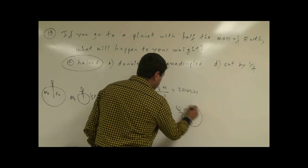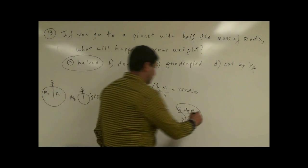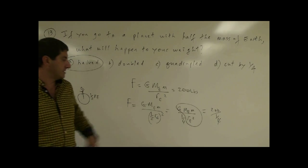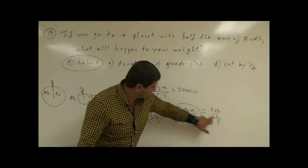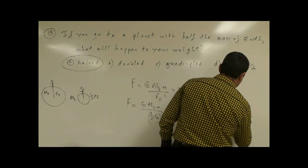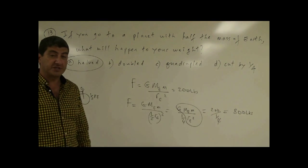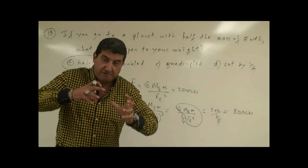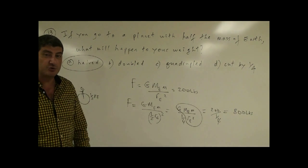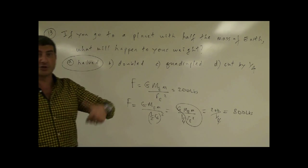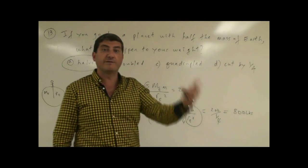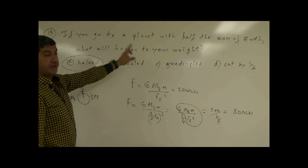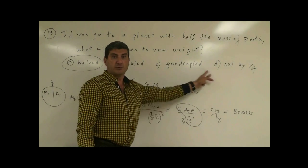So you have G M m over one-fourth R_E squared. G M m over R squared is 200 pounds, so it will be 200 divided by one-fourth — meaning four goes to the top, giving 800 pounds. You will weigh 800 pounds on a planet that has the same mass as Earth but half its radius, because everything is more concentrated. You weigh four times as much. If you weigh 100 pounds on Earth, you weigh 400 pounds on that planet. The answer would be quadrupled — your weight will be quadrupled.